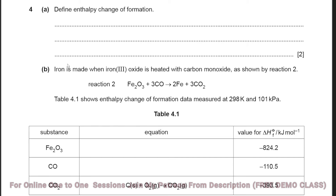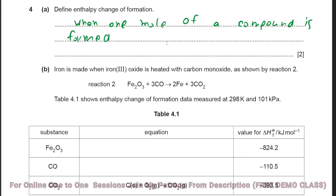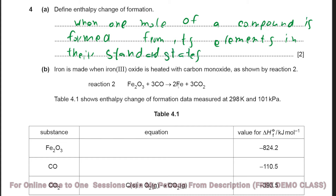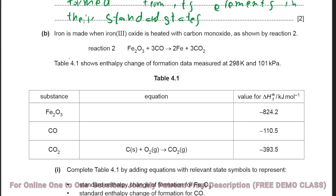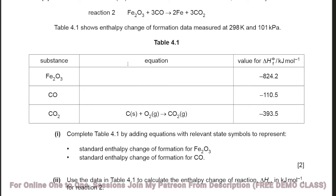Question 4: Define enthalpy change of formation. It is the enthalpy change when one mole of a compound is formed from its elements in their standard states. For the formation equations: Fe2O3 is formed from iron (solid) and O2 (gas, diatomic); the equation is balanced with coefficients 1 and 3/2. For carbon monoxide: C (solid) + ½O2 (gas) → CO (gas).